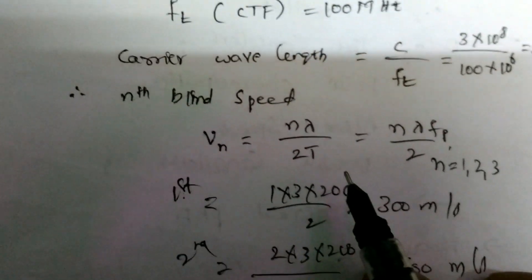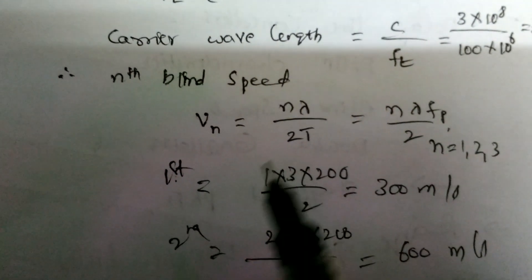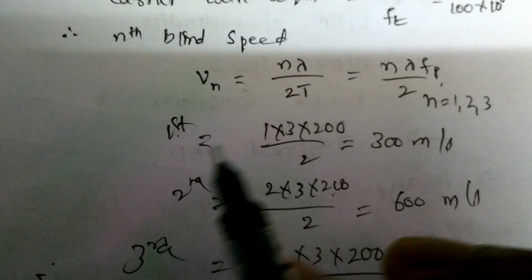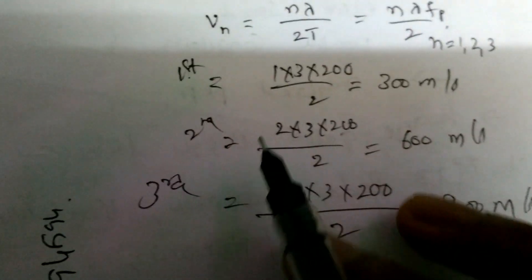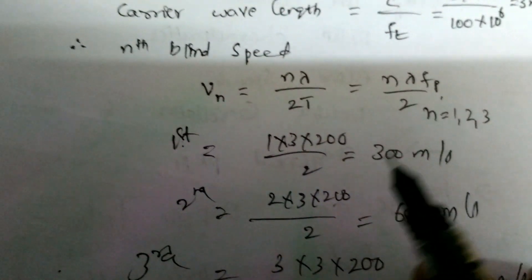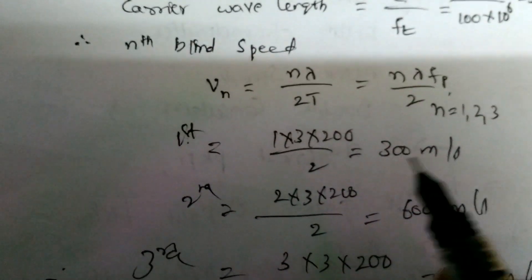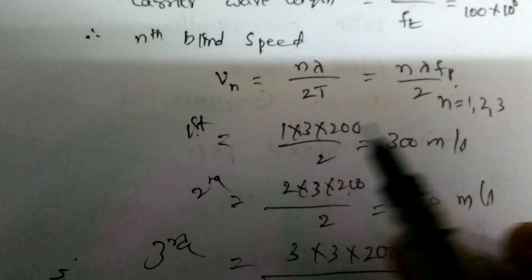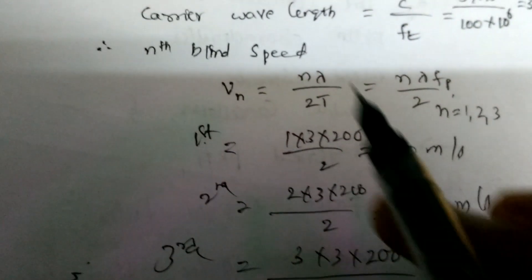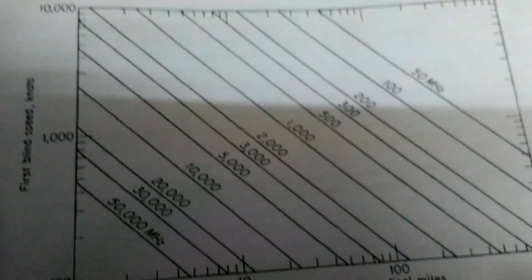If n equals 1, we get the first blind speed. If n equals 2, we get the second blind speed. If n equals 3, we get the third blind speed. The units of blind speed are meters per second, because T (time) is present in the denominator.